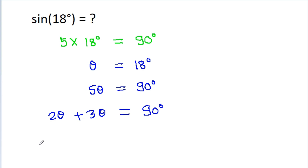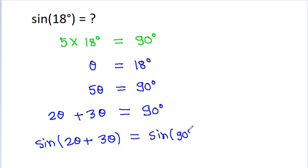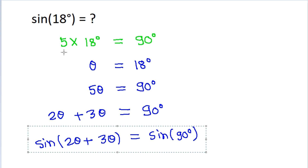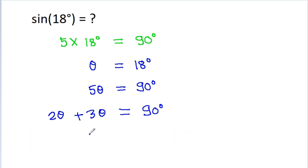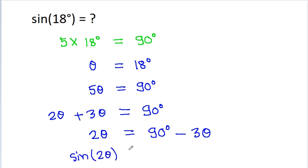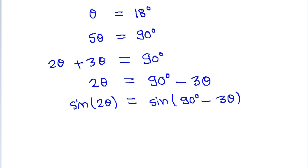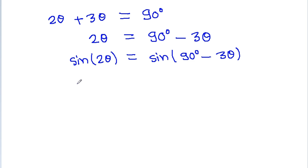Instead of taking sine of both sides of 2 theta plus 3 theta equals 90 degrees directly — which would be complicated using the sine addition formula — we write one more step: 2 theta is equal to 90 degrees minus 3 theta. Taking sine of both sides gives sine 2 theta equals sine of (90 degrees minus 3 theta), which simplifies to cosine 3 theta.